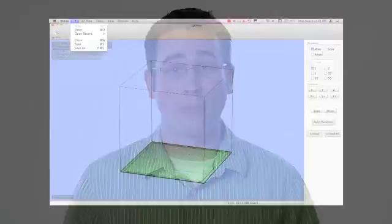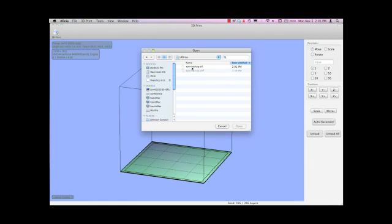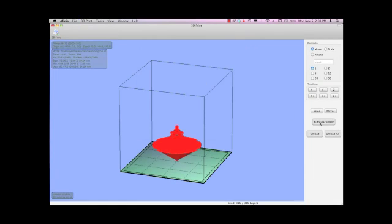So why choose Affinia? That's simple. Our printer is ready to go out of the box, so you can get right to work. The print software is custom designed and professional quality, so placement is easy and support structures are strong and come away clean.